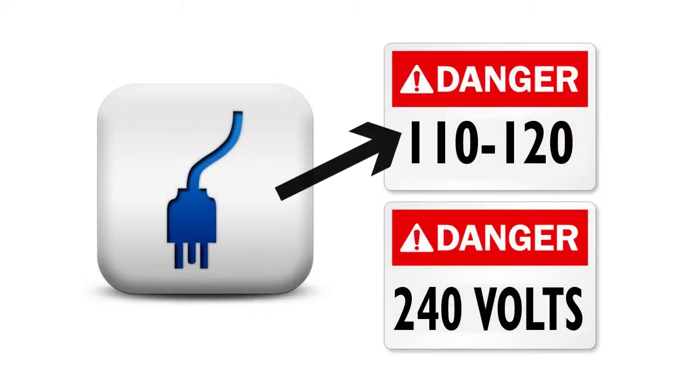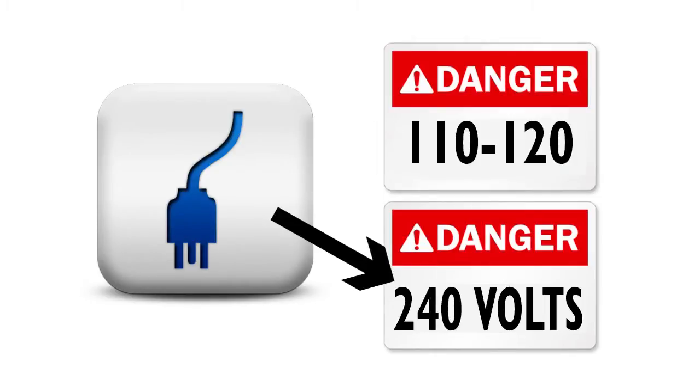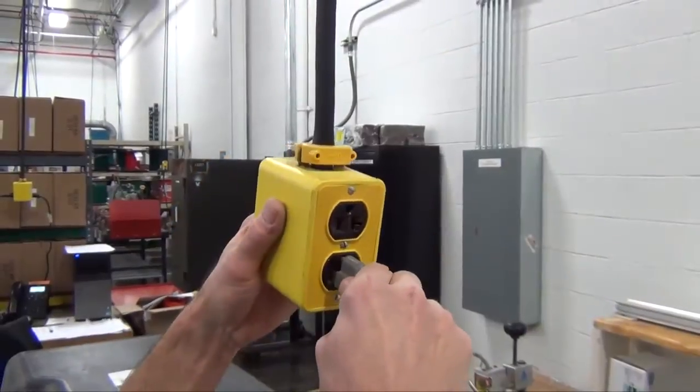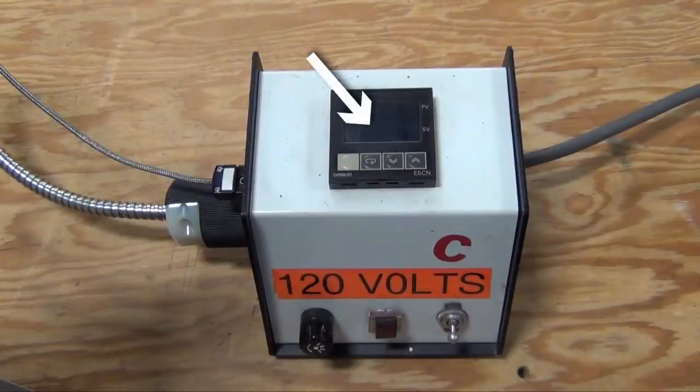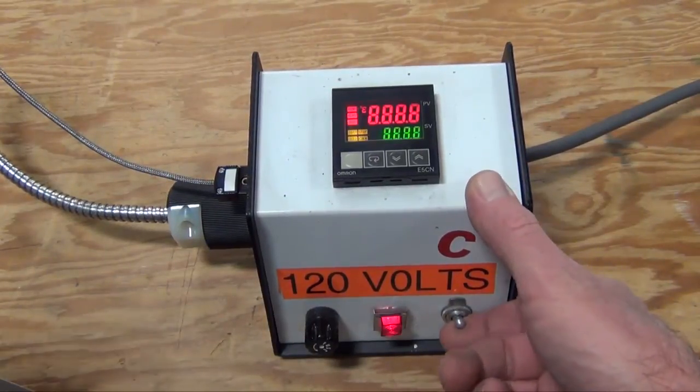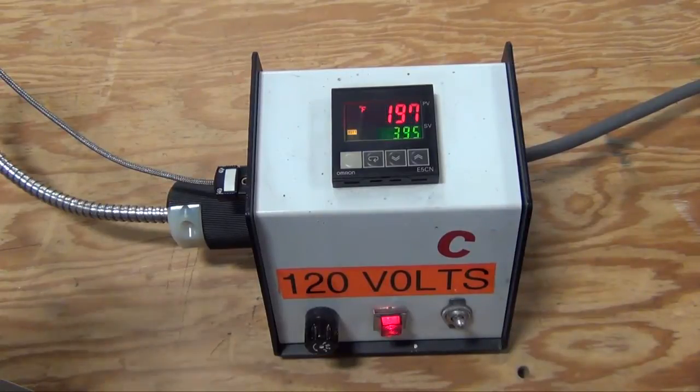The power cord is plugged into either a 110-120 volt or 240 volt AC electric power source depending on the unit. On top of the control box is the digital temperature controller. Flip switch on control box to the on position.